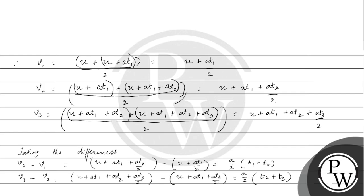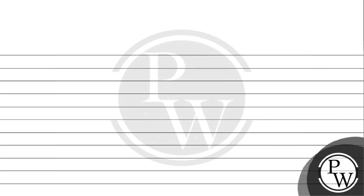So now we will take the ratio. Therefore, v2 minus v1 divided by v3 minus v2 is equal to t1 plus t2 divided by t2 plus t3.